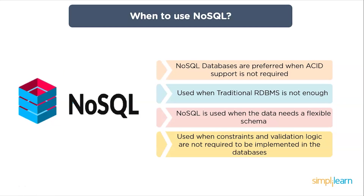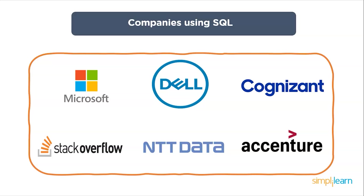NoSQL is used when your data does not require ACID support and you can work with BASE properties. NoSQL is used when the traditional RDBMS model is not enough; we use non-relational databases as NoSQL came to fulfill the voids of SQL. NoSQL gives an advantage when data needs a flexible schema. Another advantage is it is used when constraints and validation logics are not required to be implemented in a database. Most importantly, NoSQL is used when logging data from distributed sources.